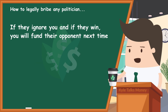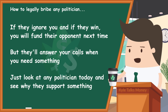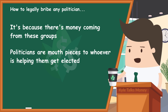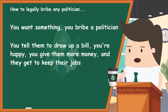Once they take your money, they're in your pocket. They're not going to take your campaign donations — what they call 'legal bribes' these days — and just ignore you. Because you know and they know that if you donate to them and they win, and they don't do as you say, next election cycle you'll fund their opponent. They'll answer your calls when you need something. Just look at any politician today — why do some support big oil companies and big banks? It's because there's money coming from these groups. Politicians are mouthpieces to whoever is helping them get elected, nothing more, nothing less.